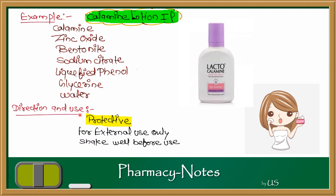Regarding directions and use, calamine lotion is for external use only — it can be applied externally or topically, as shown on the label in red color. Another direction: shake well before use, because calamine lotion is a suspension-type system. Since bentonite is added as a suspending agent, the calamine may settle at the bottom, so shake well before use.